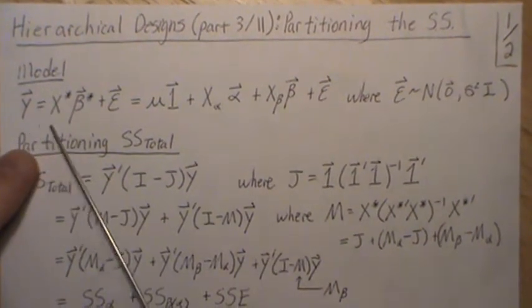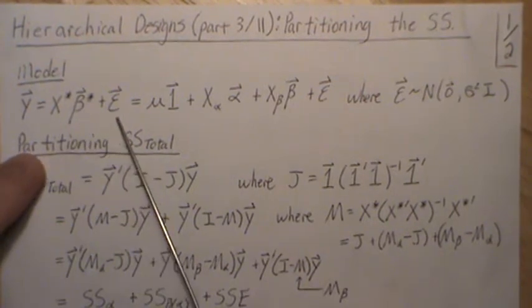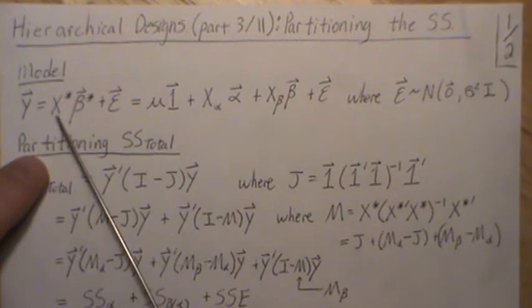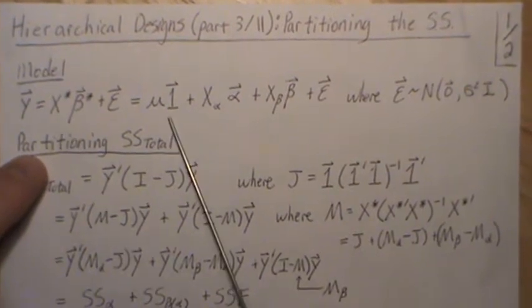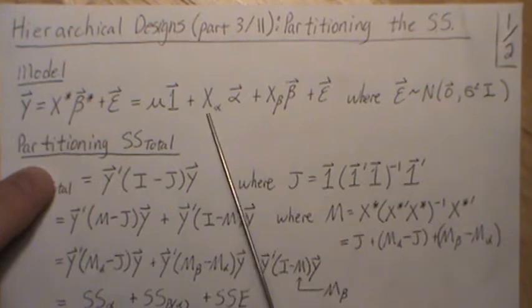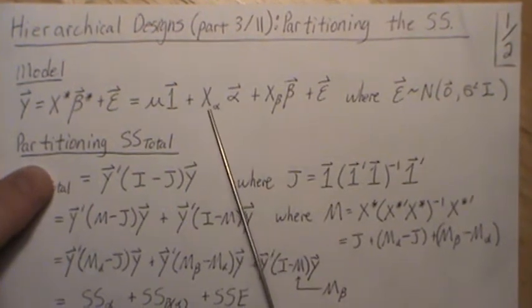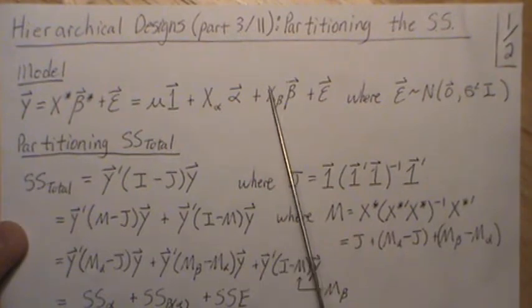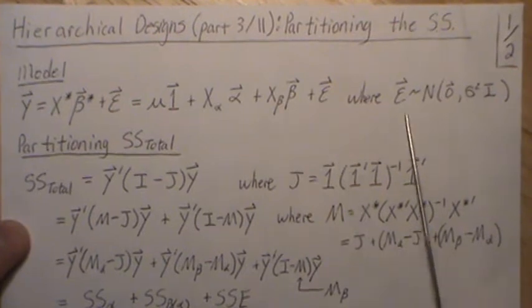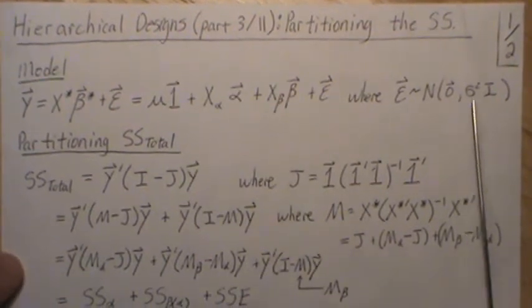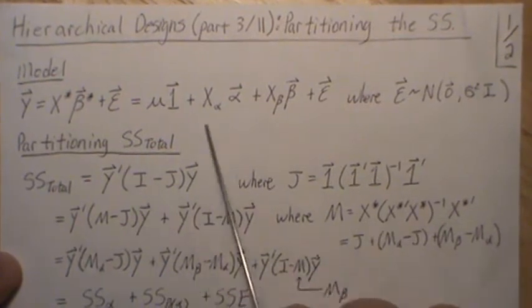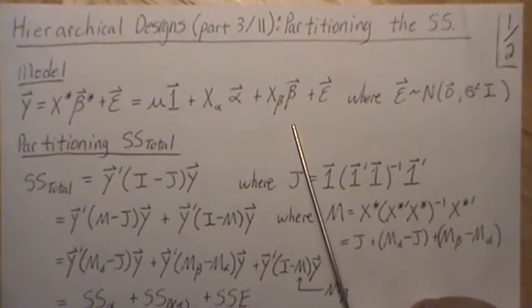As a reminder, the model is y equals x-star beta-star plus epsilon, so it is a linear model. We partition the design matrix into a column of ones, a part that deals with factor A (called x_alpha), and a part that deals with factor B (called x_beta). The epsilons are normally distributed with mean vector zero and covariance matrix sigma-squared times I. I'm going to refer you to parts one and two for more detail about the model.